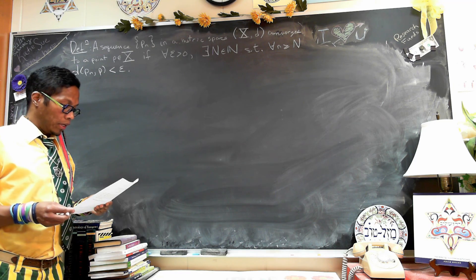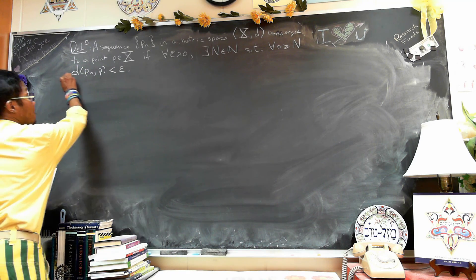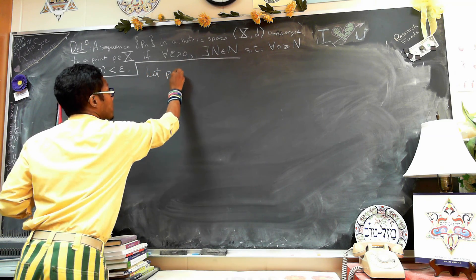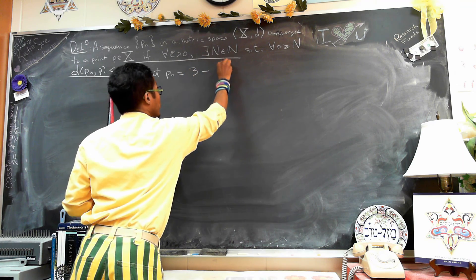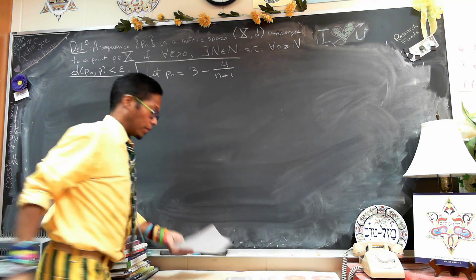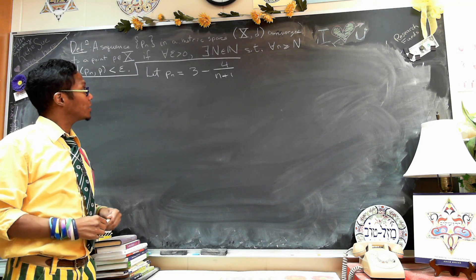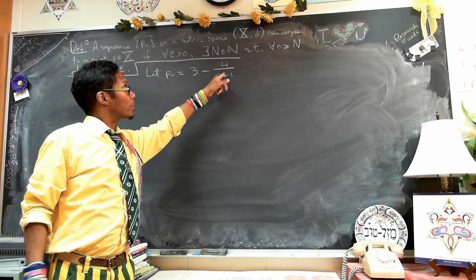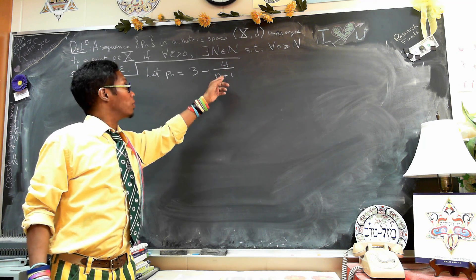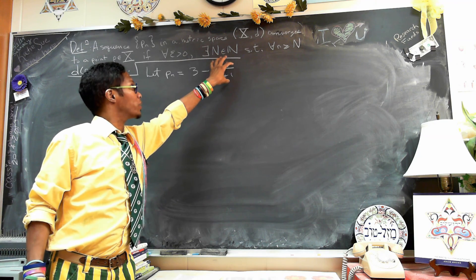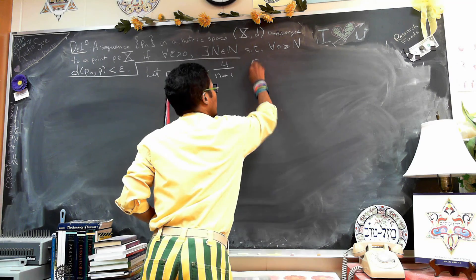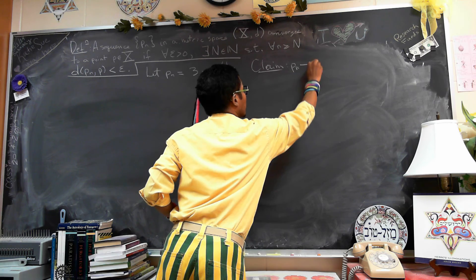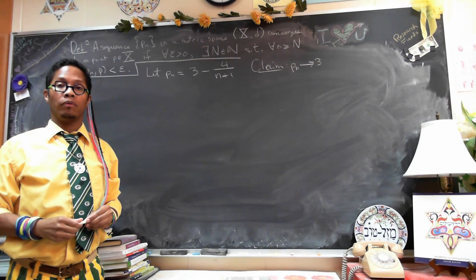Let us prove the following. Define P_n to be 3 minus 4 over (n+1). From basic calculus knowledge, we know intuitively that as n goes to infinity, 1 over n tends to 0, so the denominator gets big and the whole fraction gets small. So we know intuitively that P_n will converge to the value 3.